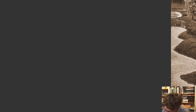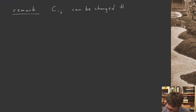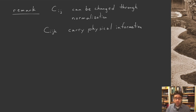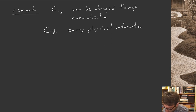The two-point function coefficients C_ij can be changed through normalization — by just changing what you mean by the fields. However, the three-point function coefficients C_ijk carry physical information. If you want to be pedantic, you could say the ratios of the three-point to the two-point functions are the quantities that carry physical information — these ratios are the physically meaningful content.